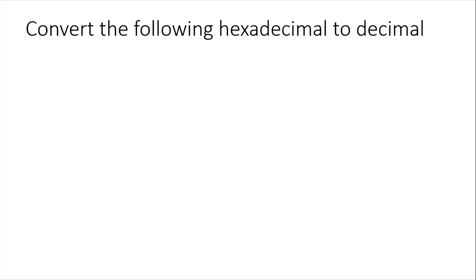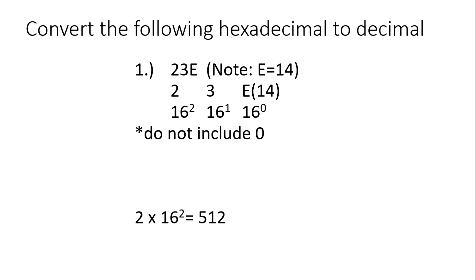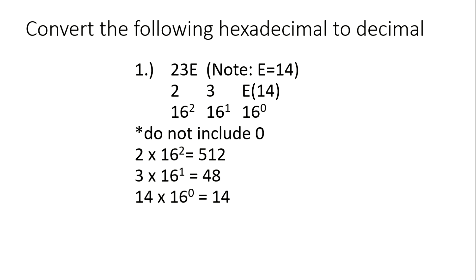For the conversion from hexadecimal to decimal, we have 23E base 16. Take note that E is equal to 14. There is no decimal point, so starting at the one's digit place: 16 raised to 0, 16 raised to 1, and 16 squared. We multiply: 2 times 16 squared, plus 3 times 16, plus 14 times 16 raised to 0. The result is 574 base 10.